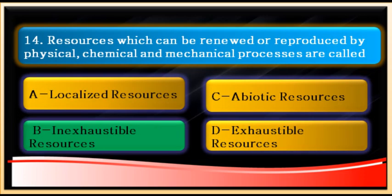Question number fourteen: resources which can be renewed or reproduced by physical, chemical, or mechanical processes — what are they called? They are called renewable resources, or inexhaustible resources. Nature has different processes like the water cycle, carbon cycle, and hydrogen cycle that reproduce and regenerate these resources. Localized, abiotic, and exhaustible resources are all wrong answers. Exhaustible resources, like petroleum, get exhausted after use.